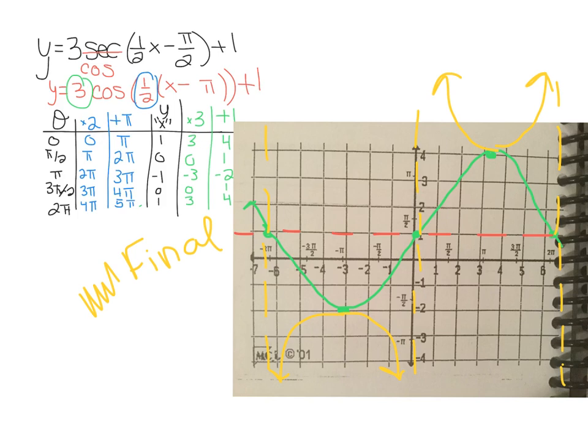Graphing cosecant and secant isn't that bad, especially if you know how to graph sine and cosine. The only things to remember are: secant goes with cosine, and cosecant goes with sine. And please don't forget — tell your teacher which graph is your final answer, and don't be the student who perfectly graphs the sine or cosine but forgets to flip it over. You don't want to leave sine or cosine as your answer when graphing secant or cosecant.